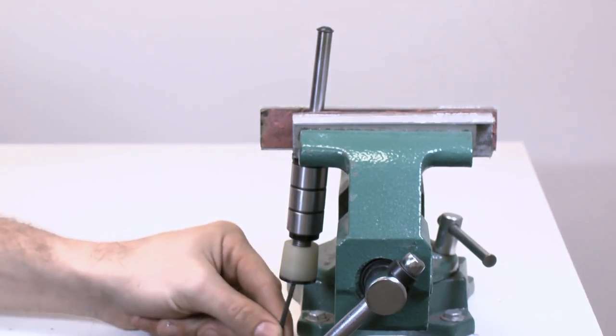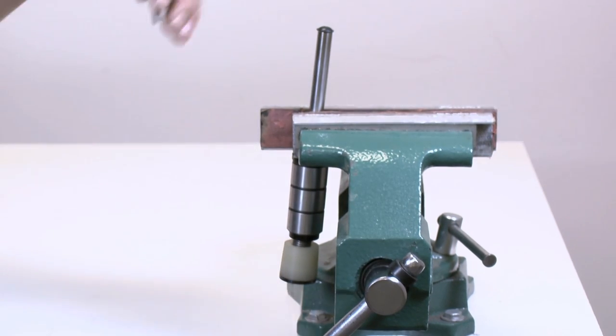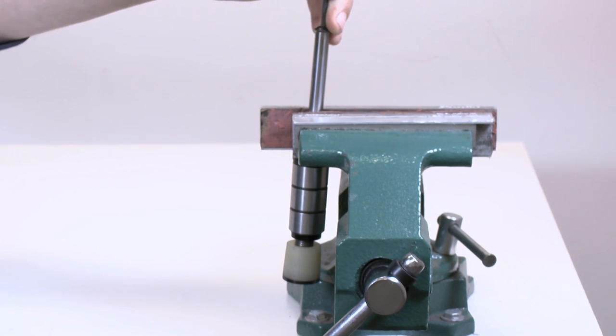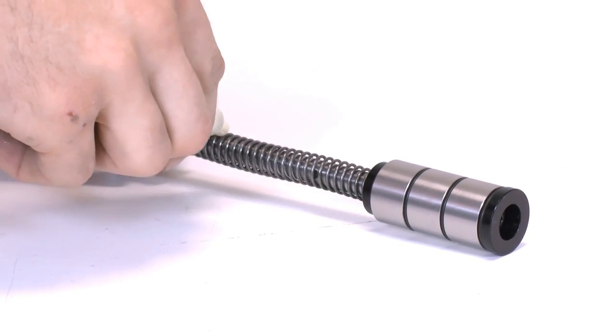As a part of your regular rifle maintenance routine, make sure to check the tightness of the hex head screws at both ends of the silent captured spring. If they are loose, remove them, clean the threads with solvent, and reapply thread locker before installing.